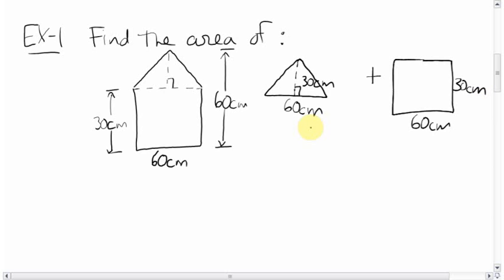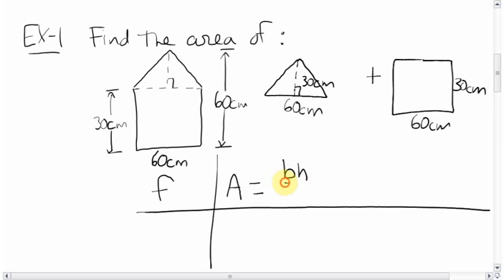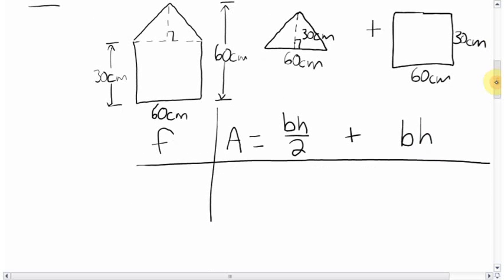To find the area, we first should write down the formulas, because there's multiple shapes here. So again, FWA. The formula for the area of a triangle is base times height divided by 2. And for a square or rectangle, the formula is base times height. So let's plug some numbers in. Let's start doing the work.